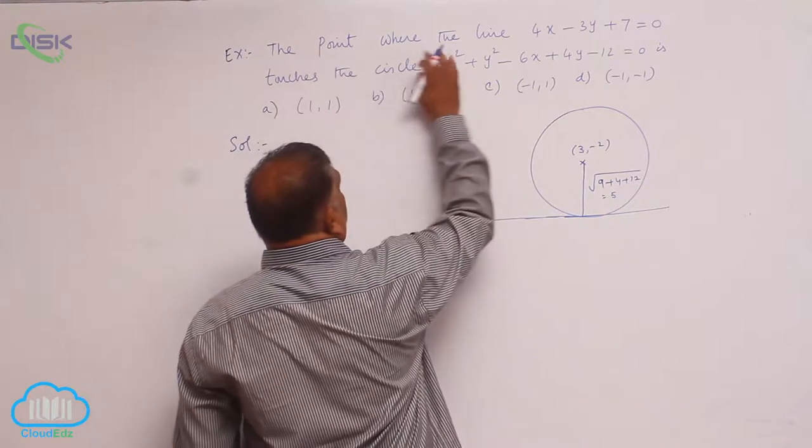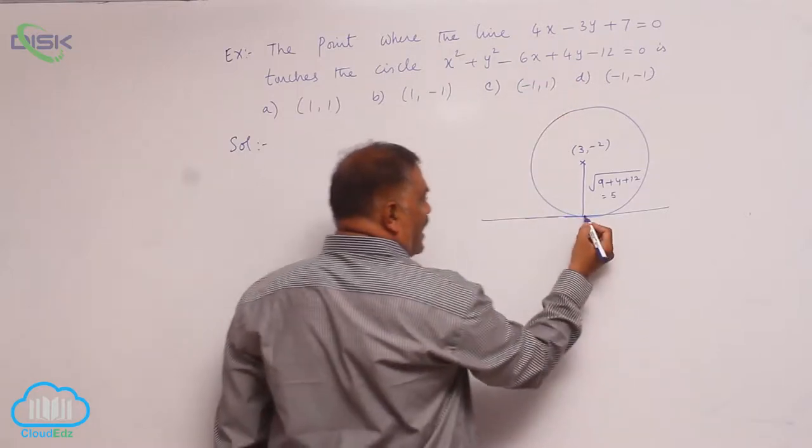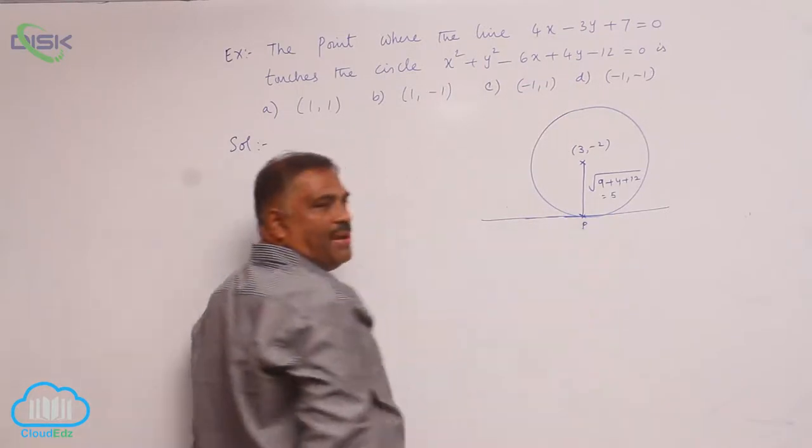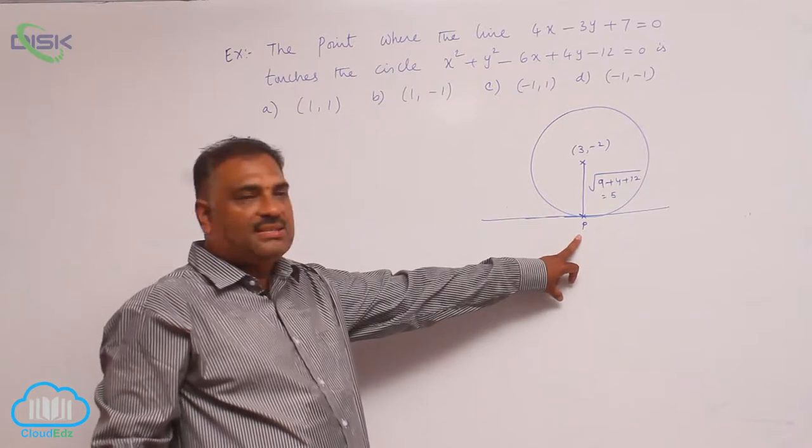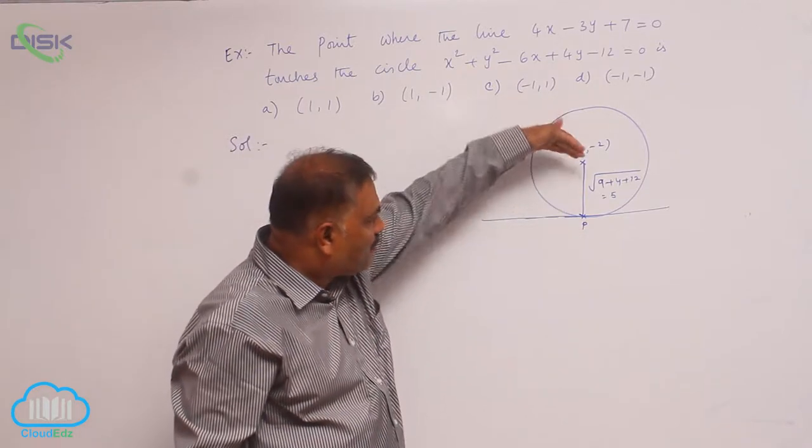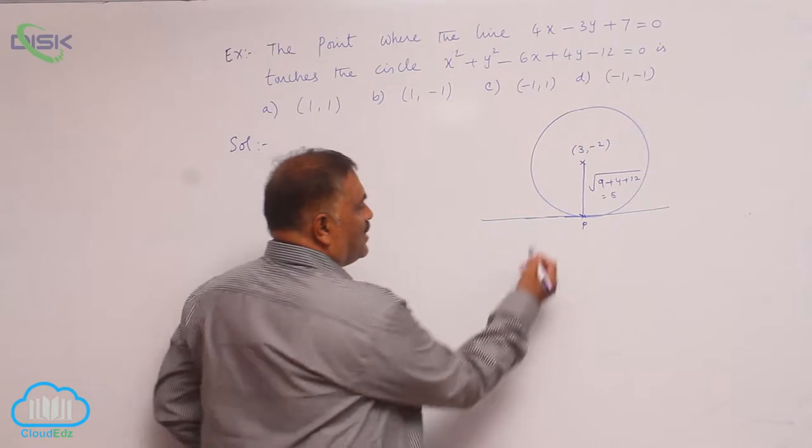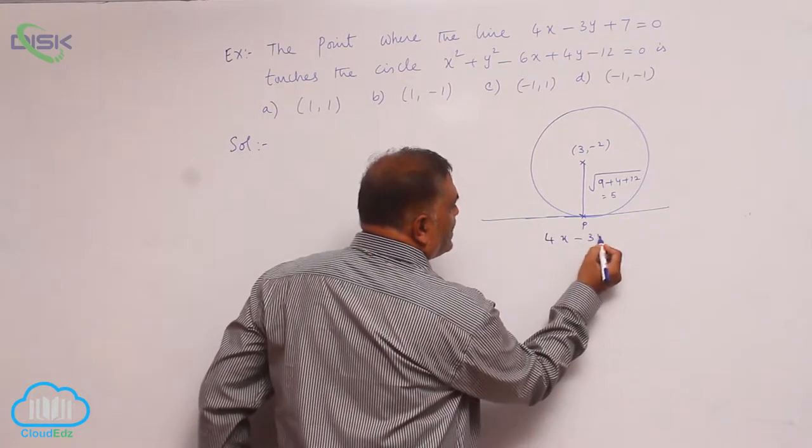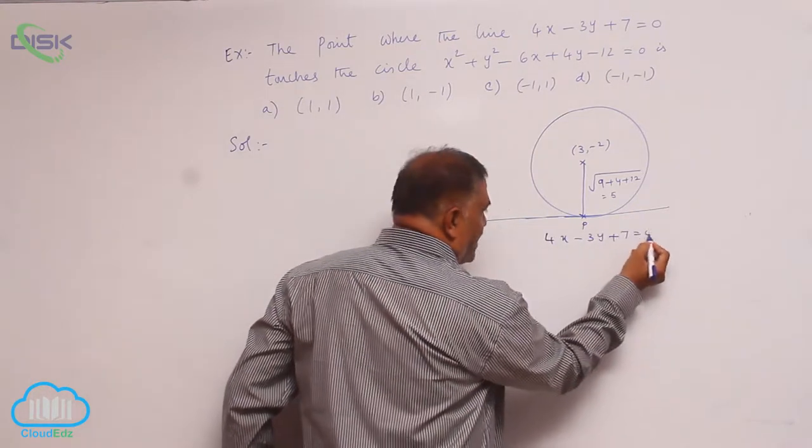Here you want the point where the line touches. The line is touching at this particular point means this clearly p is nothing but the foot of the perpendicular onto this line. Line is given by 4x minus 3y plus 7 equal to 0.